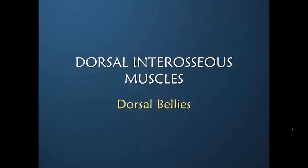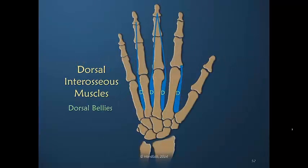Looking again at the dorsal bellies of the dorsal interosseous muscles — we have four dorsal interosseous muscles, so we have four dorsal bellies. There is a bit of an anomaly: they insert into the dorsal apparatus with the exception that the first dorsal interosseous is sometimes primarily a bony insertion, although there may be some contribution to the dorsal apparatus.